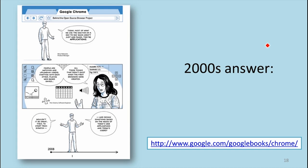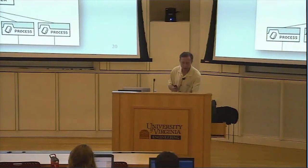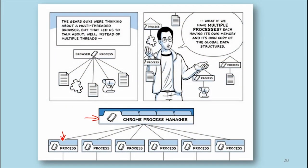Chrome was launched in about 2008, and they released a great comic book as part of that launch. The comic book actually explains most of the technical concepts we'll cover in this class — you can think of it as another required textbook. Part of what they explain is why you want more processes. Their design was: we want our browser to be more stable, and we don't think we can write code that doesn't crash. So they separated the browser into separate processes, where if one crashes, it won't crash the whole browser. The other reason was security — each page is isolated from other pages with its own memory space.